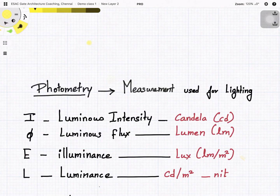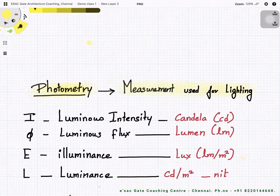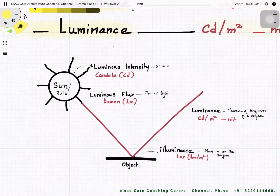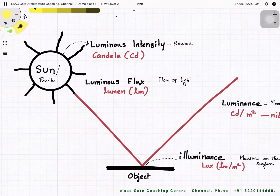Today we are going to discuss photometry — the measurement used for lighting. There are four important terminologies: I for luminous intensity, phi for luminous flux, E for illuminance, and L for luminance. Since these terms look alike, it is possible to get confused between the terms and their units. We will see how to remember these terms along with their units by understanding the concept behind each.